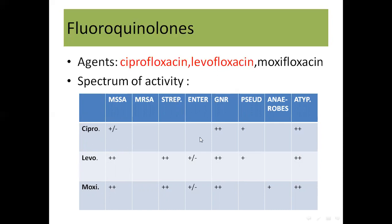Starting with the first drug, ciprofloxacin: it is poor against gram-positive bacteria, with only variable activity against methicillin-sensitive staph, so it is overall poor against gram-positive bacteria. It is good for gram-negative bacteria, moderate for pseudomonas, and good for atypicals — this is the first drug we see that is good for atypical bacteria. It is poor against anaerobic bacteria.